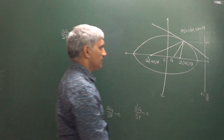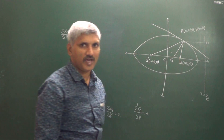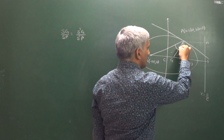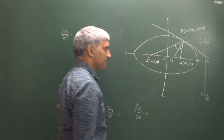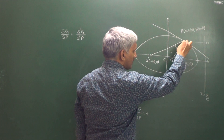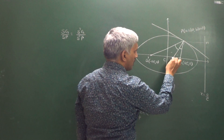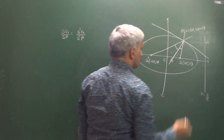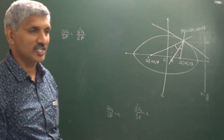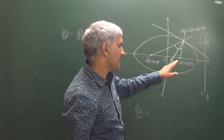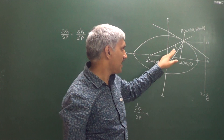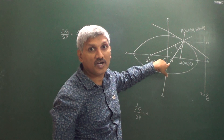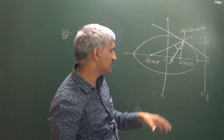From this, we can say these two triangles are similar triangles. When they are similar, the corresponding angles are equal. When these two angles are the same, the normal is the internal angle bisector. If the normal is the internal angle bisector of angle SPS', then the tangent is the external angle bisector of angle SPS'.